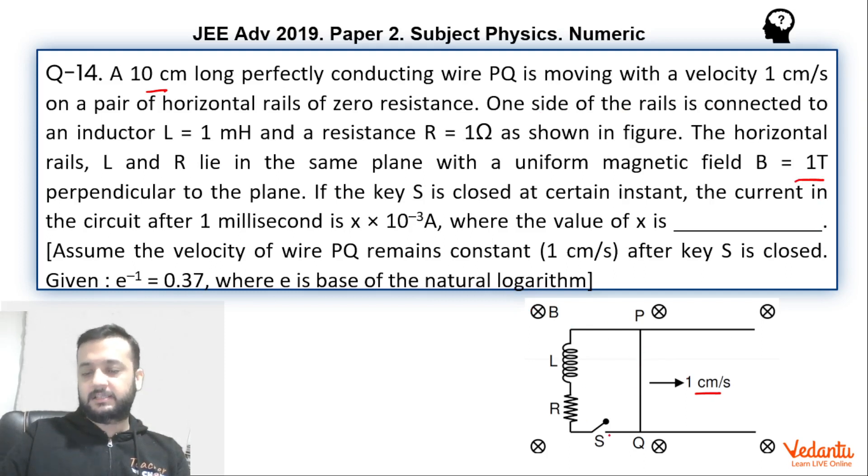At a certain instant this switch is closed. The resistance is 1 ohm, the inductance is 1 millihenry. So when the switch is closed there will be flow of current because of the induced EMF. We have to find the value of that current at the instance of 1 millisecond after closing the circuit.